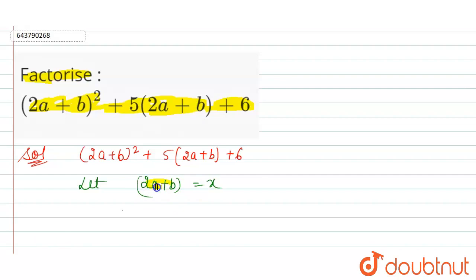That is (2a + b)² + 5(2a + b) + 6 equals, put the value of 2a + b, so here it is x² + 5, value of 2a + b is x, + 6.